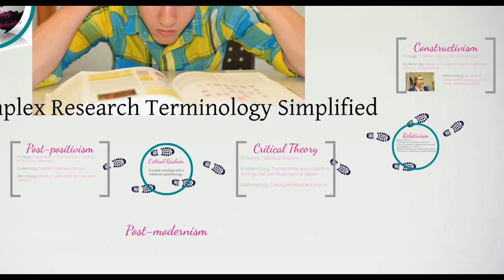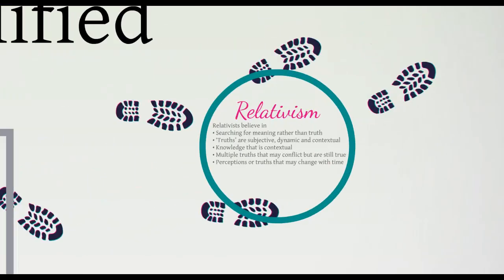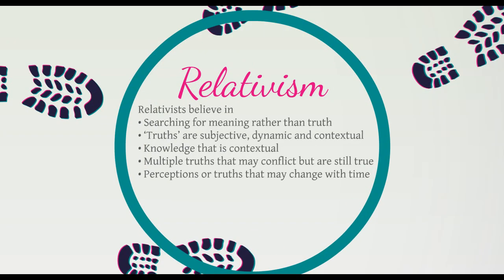Alternate ontologies have emerged that underpin newer paradigms of research. The strongest contrasting ontological perspective to realism is relativism. Research founded on relativism searches for meaning in the experiences of individuals. Relativism is the belief that a reality cannot exist without context. Relativists believe that there are multiple mental constructions of reality, influenced by experiences and social interactions. Each person therefore has their own reality that is considered correct. Relativism is the ontological perspective within the qualitative or constructivist paradigm of research.